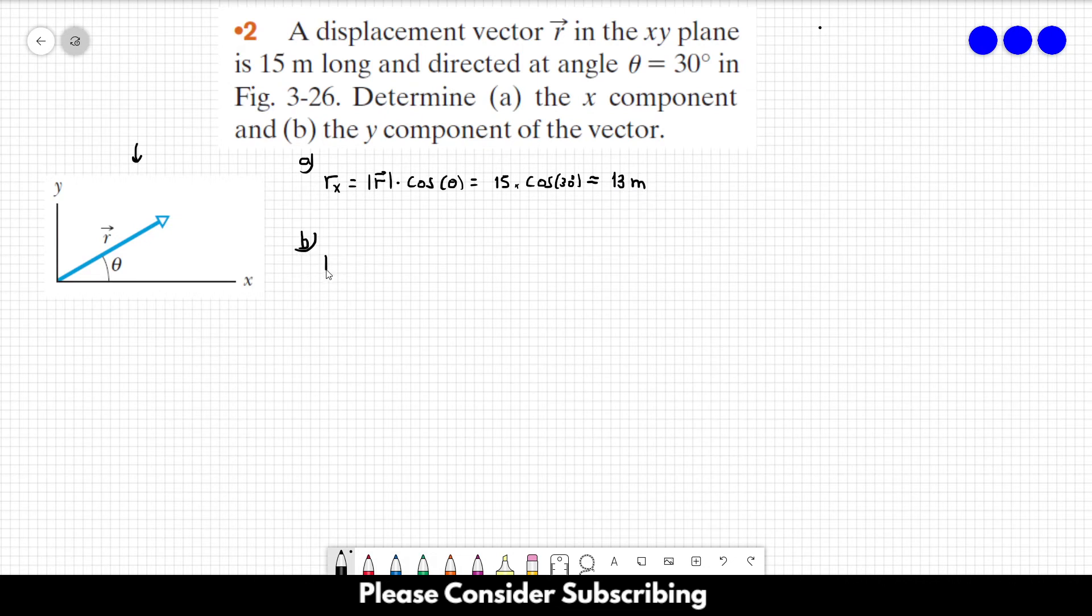Letter B, if you want to find Ry, the y component, we just take the magnitude of the vector and multiply by the sine of the angle.